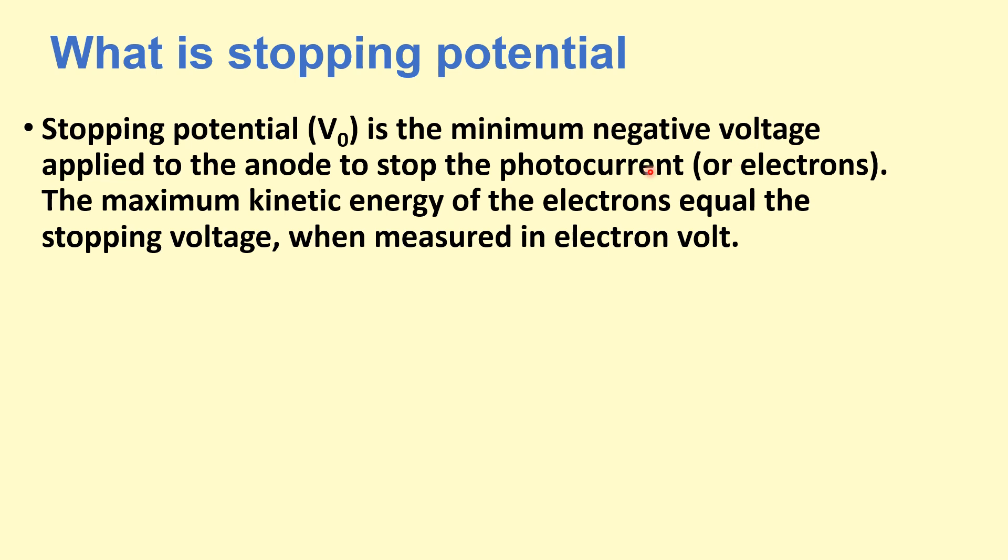What is the stopping potential? Stopping potential is the minimum negative voltage applied to the anode to stop the photocurrent or photoelectrons. The maximum kinetic energy of electrons equals stopping voltage when measured in electron volts. We can see that the photocurrent is zero at this V0, which is known as the stopping potential in the negative voltage direction.